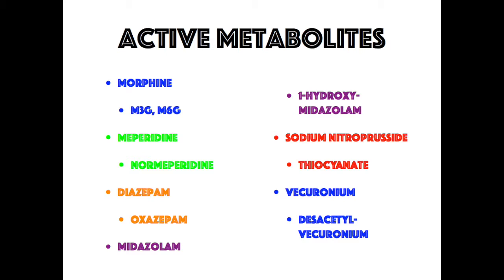Regarding drug metabolites: morphine has active metabolites including morphine-3-glucuronide and morphine-6-glucuronide. Meperidine has normeperidine as a metabolite, which can cause seizures. Diazepam produces oxazepam, which has sedative properties. Midazolam has a metabolite of 1-hydroxy midazolam, which is also sedating. Nitroprusside has thiocyanate as a metabolite, which is neurotoxic. Vecuronium also has a metabolite with a neuromuscular relaxant effect.